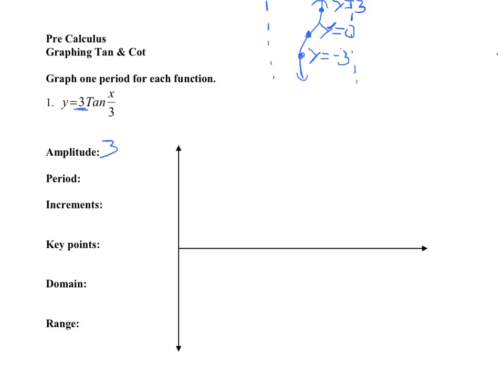So those are the three y values that we're going to get, and it's going to tell us that it's going to be in between the VAs. Okay, now, period for this, this is a little bit different. Instead of doing two pi over b, it's pi over b.